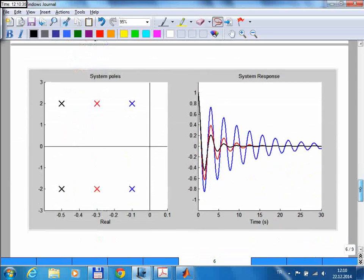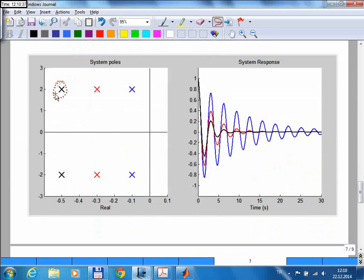For example, take a look at these black poles. The real part is minus 0.5, which means the time constant for those poles is negative 1 over that. That gives us 2 seconds.